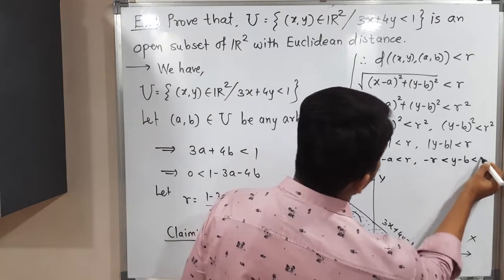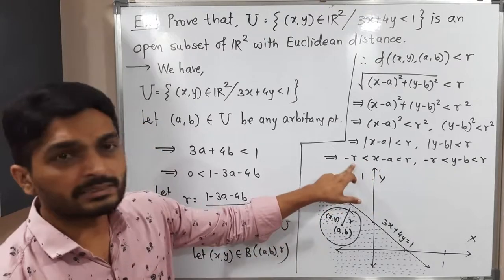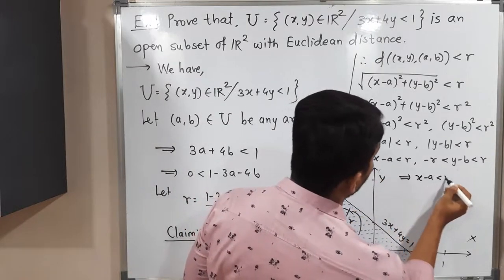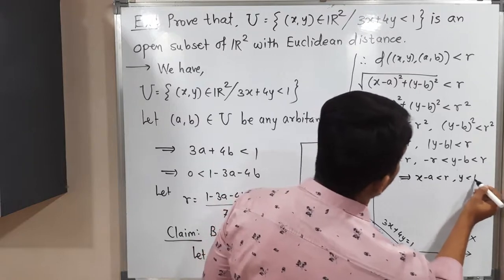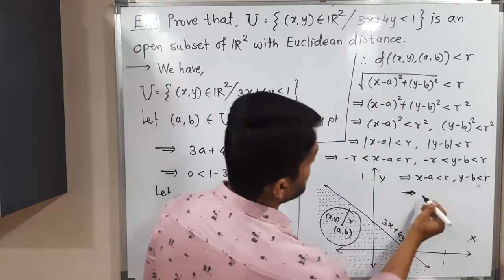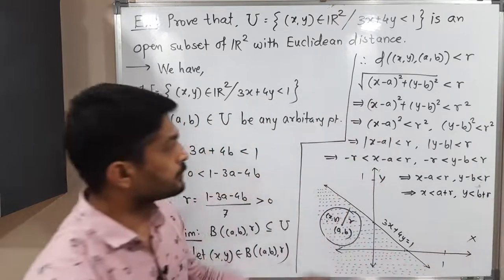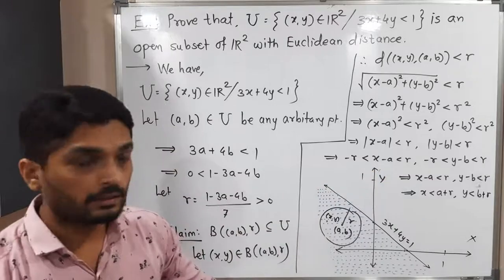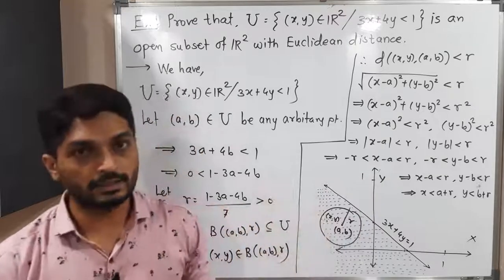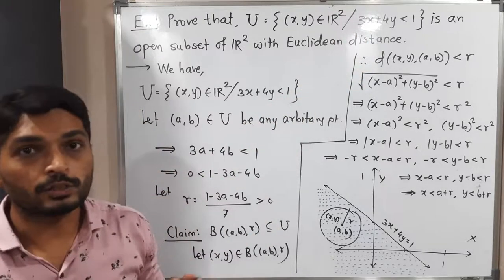We are not interested in the −r part, so we focus only on the right side of each inequality: x−a < r and y−b < r. Shifting a and b to the other side gives x < a + r and y < b + r. We removed the left part of the inequality and shifted a and b to the other side.